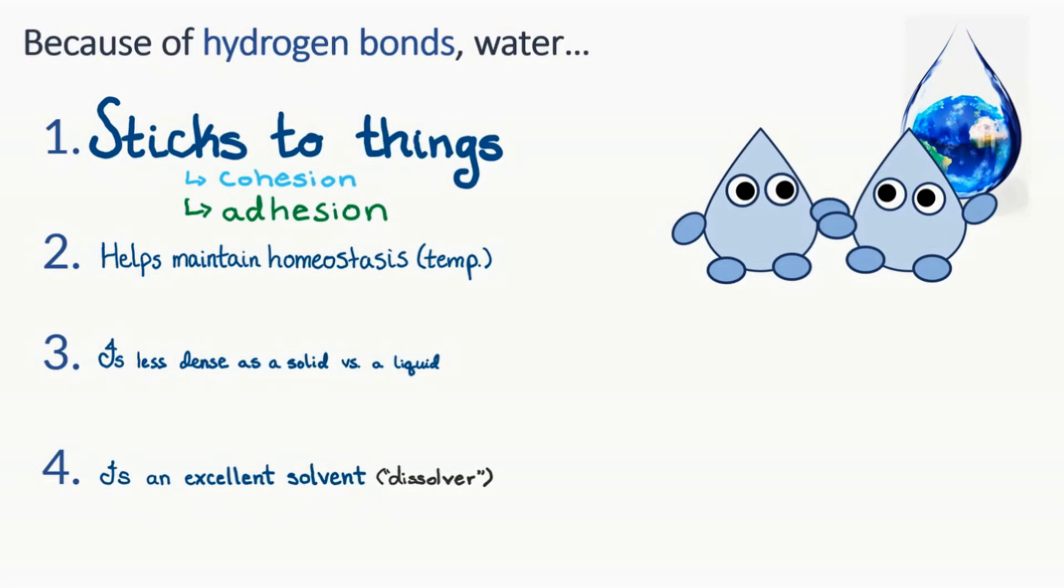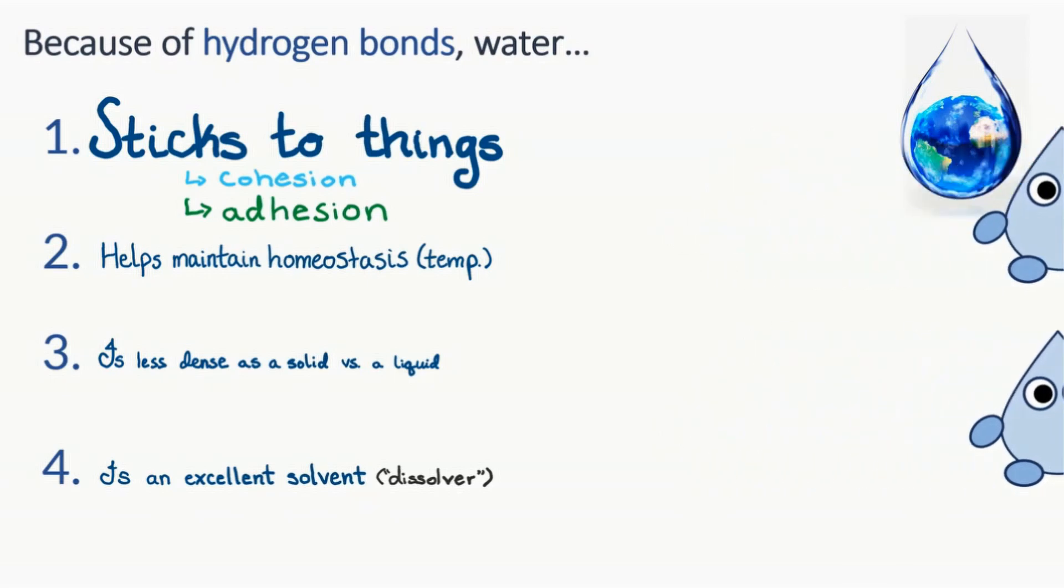Adhesion, on the other hand, refers to the attraction of molecules for other molecules of a different kind. Adhesion is called this because it's referring to things that are adhering to something else. So in this case, that would be water molecules attracted to other substances. And if those substances happen to be polar or have a positive or negative charge to them, then water will cling to those substances really strongly.